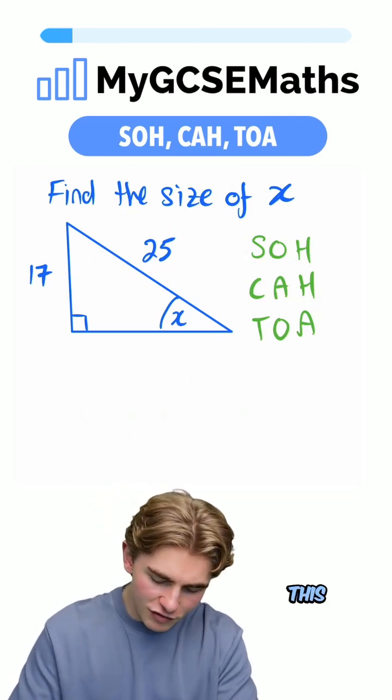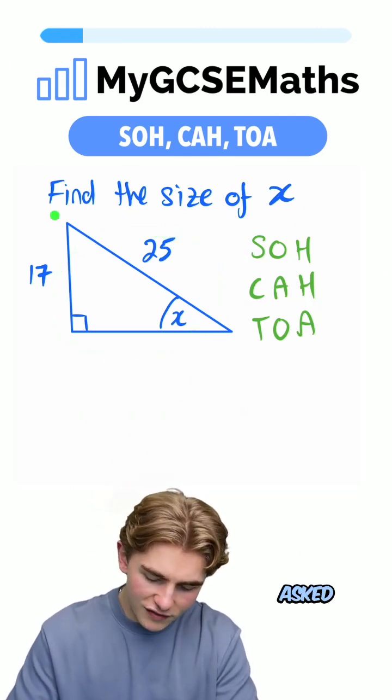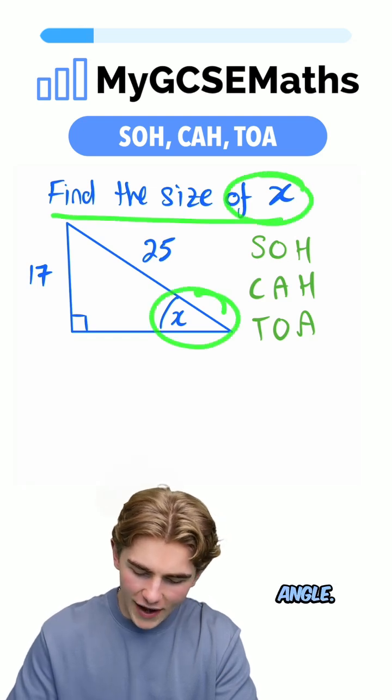Okay, let's have a look at this. We're given this right angle triangle and we're asked to find the size of X, which is the angle down here.